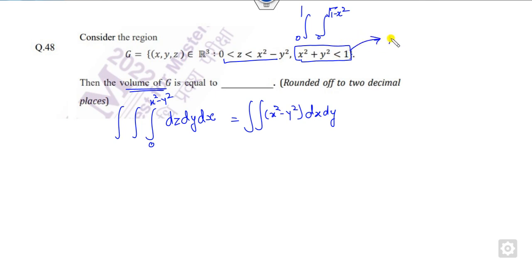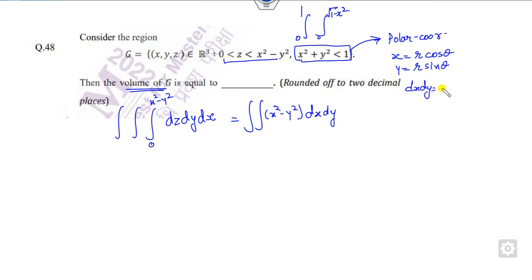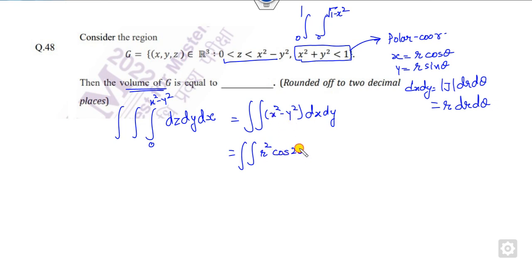But whenever a circle is given to you, you have to convert it into polar coordinates for easy calculation. So x = r cos θ and y = r sin θ. Then dx dy is nothing but the Jacobian dr dθ, which is r dr dθ. You can substitute the value: this is r² cos²θ − r² sin²θ = r cos(2θ), times r dr dθ. The limits are 0 to 2π and 0 to 1.